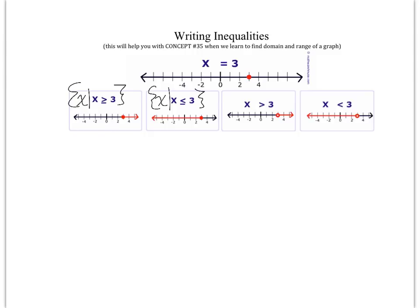The next one has an open dot on 3 with shading to the right. Because it's an open dot, 3 is not part of the solution, so we leave off the line on the inequality symbol and write x is greater than 3. As a domain: x such that x is greater than 3. Then an open dot on 3 shaded to the left gives us x is less than 3, written as x such that x is less than 3.